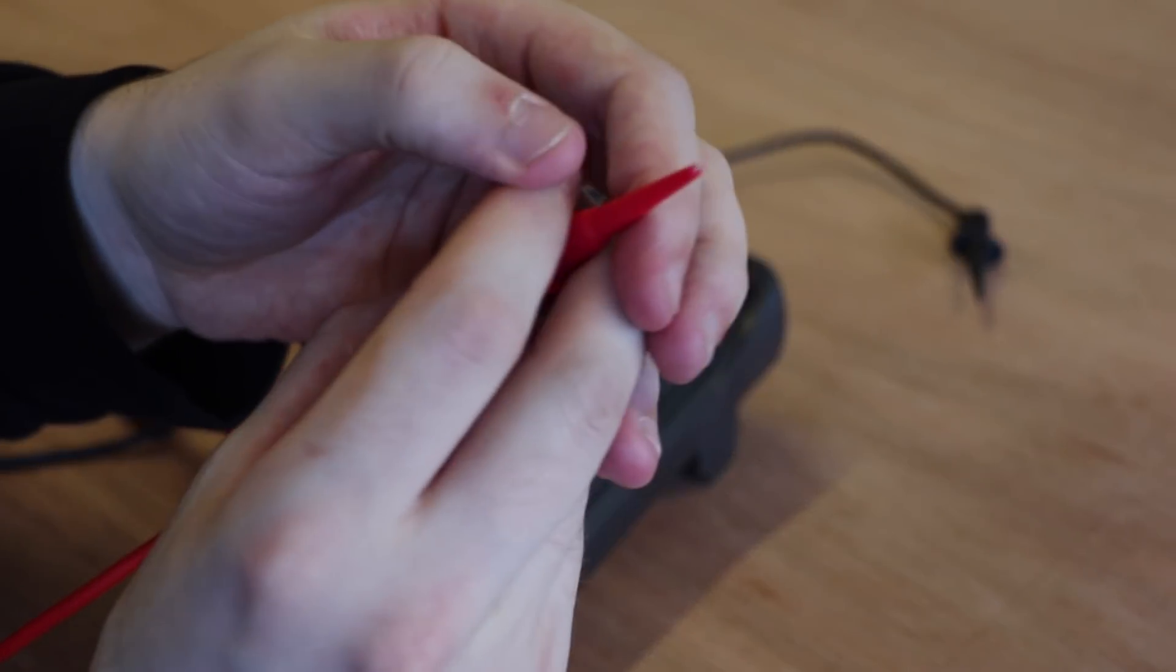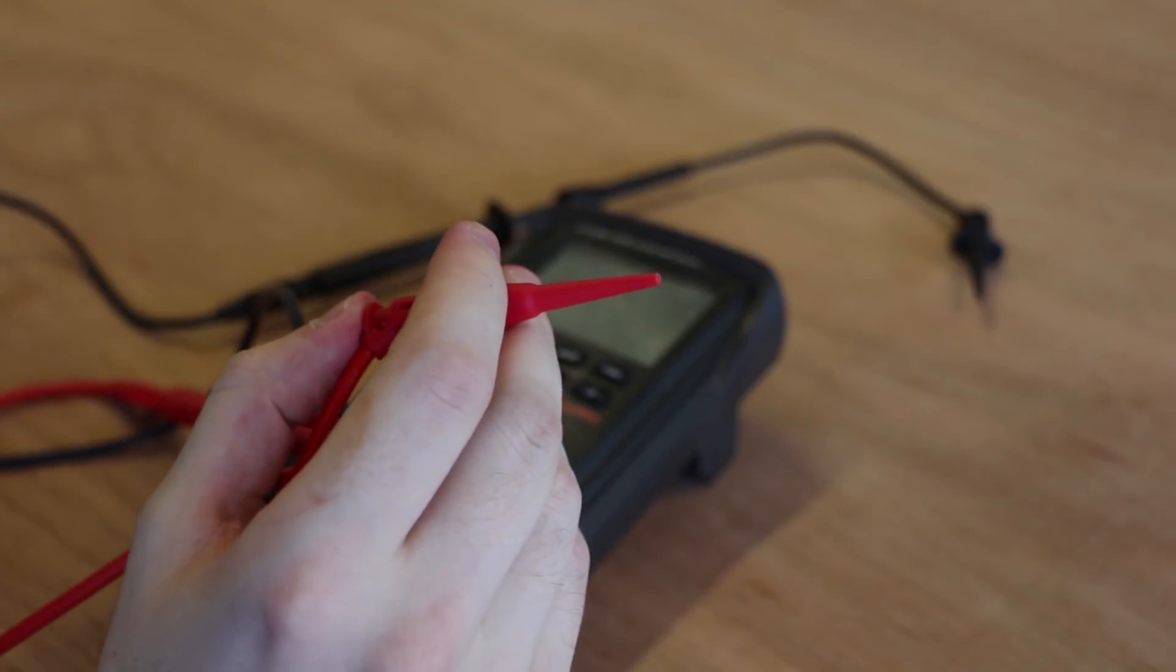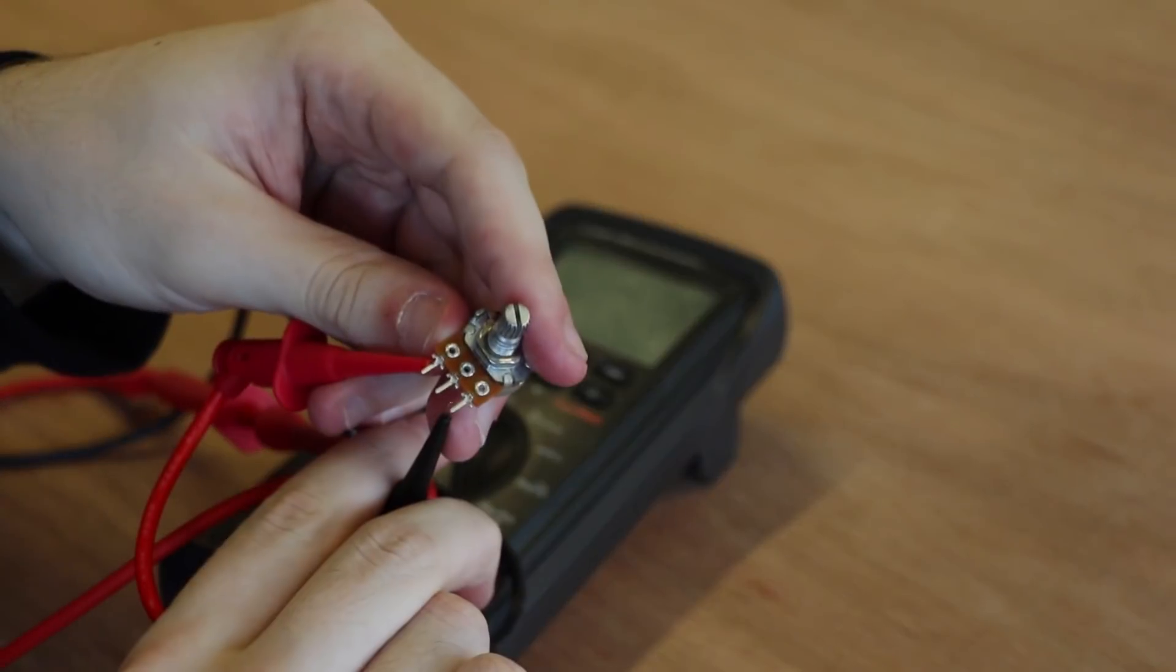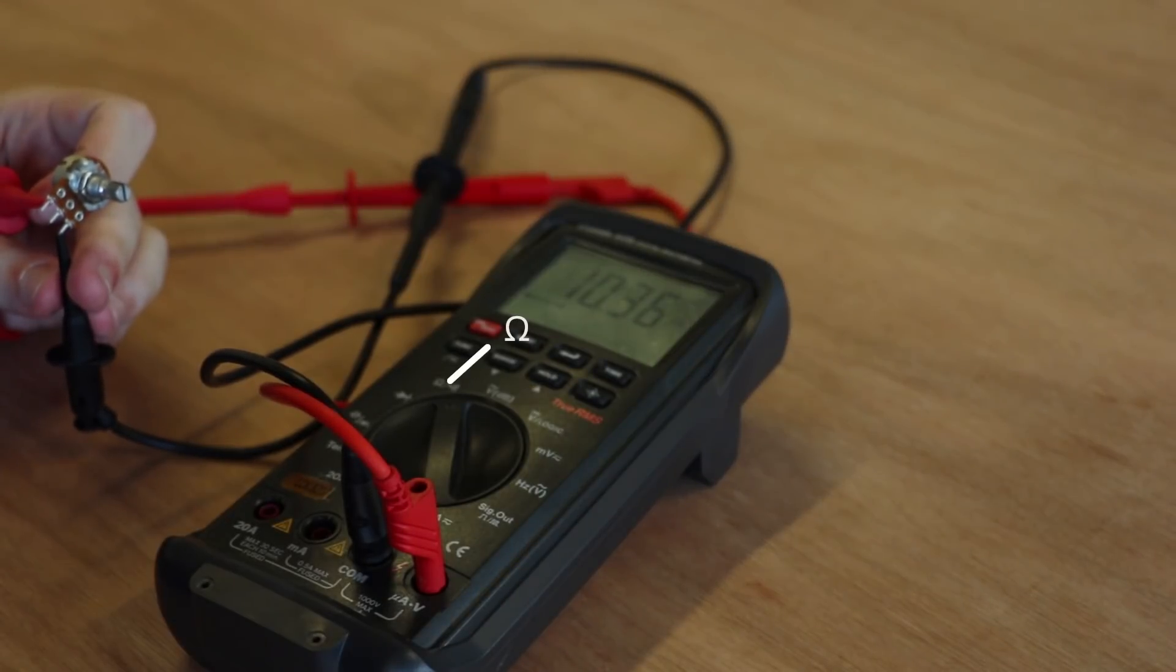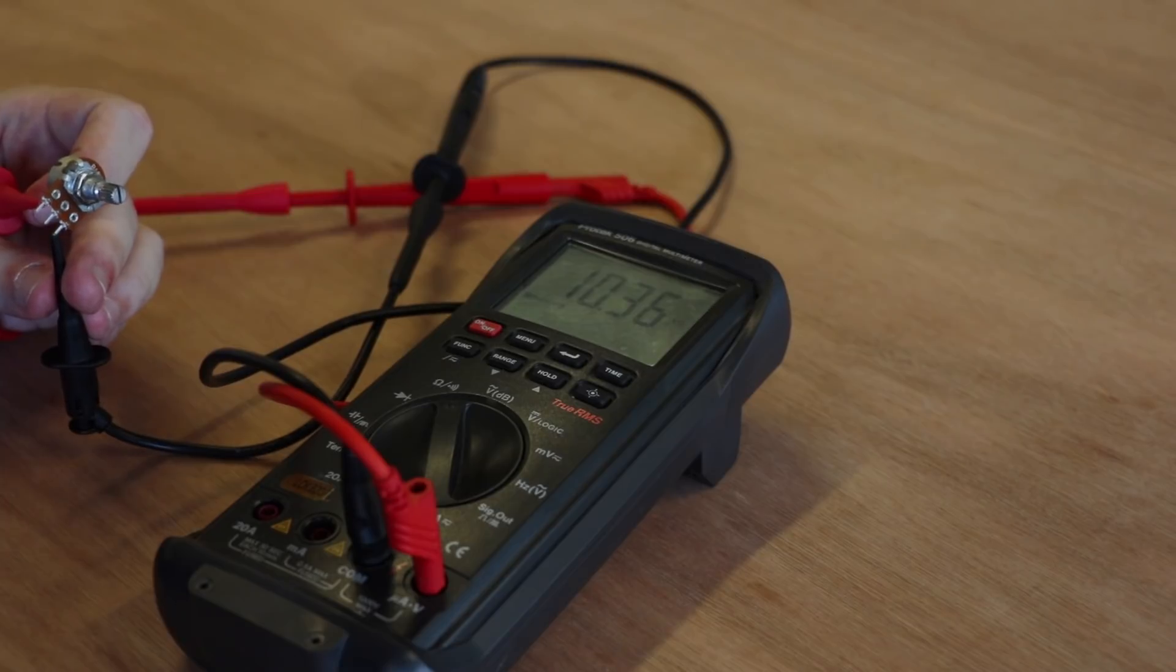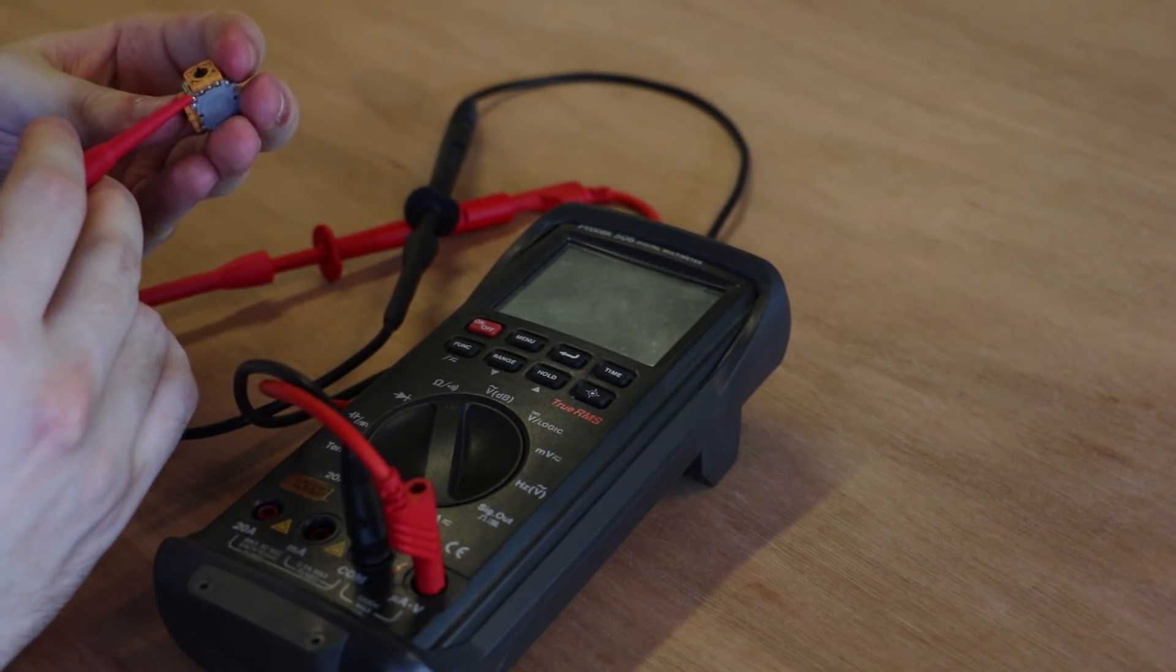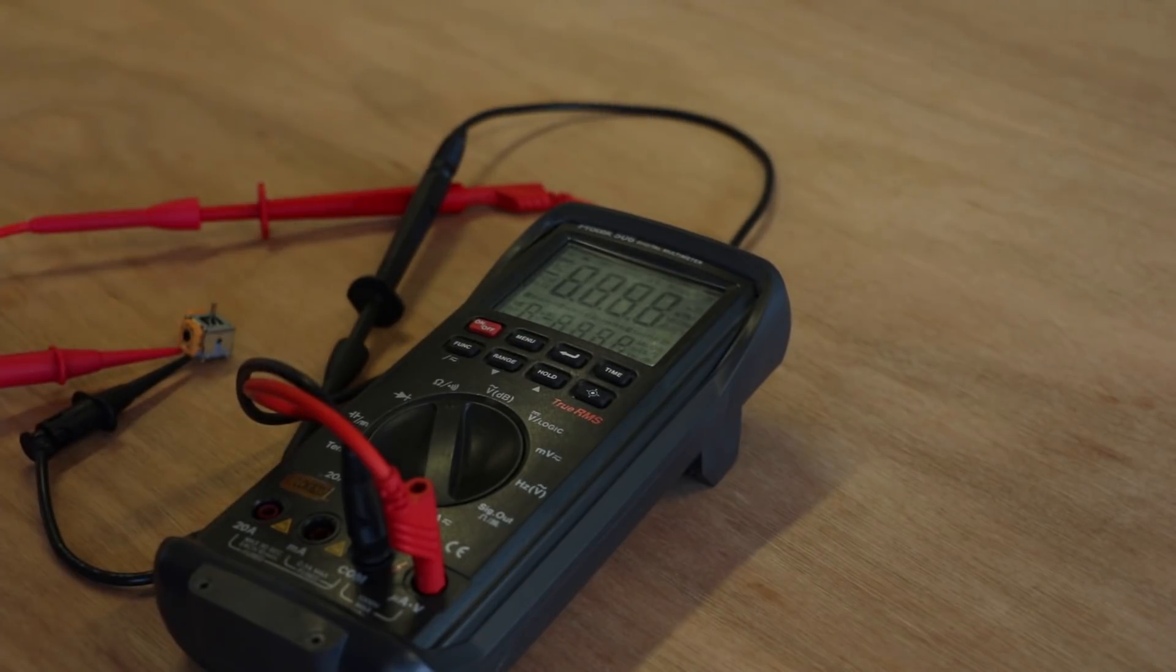This multimeter comes with handy clamps to attach to the potentiometer. First, we check the resistance of a potentiometer with a known resistance to make sure the multimeter is working correctly. This standard potentiometer should have 10k resistance. When we measure the resistance of the joystick component, we see that the resistance is also 10k. This result may vary on your controller.